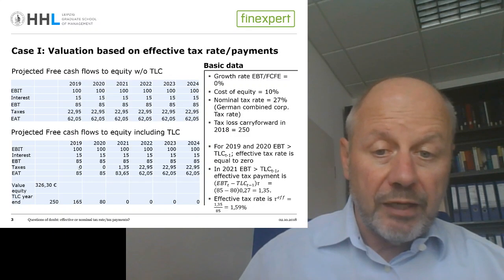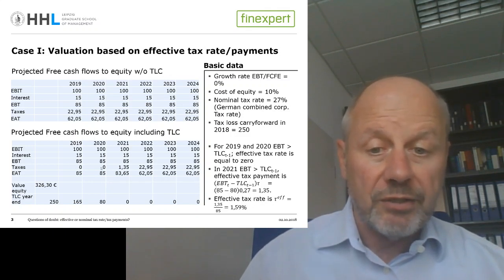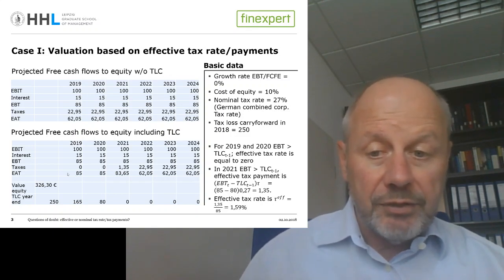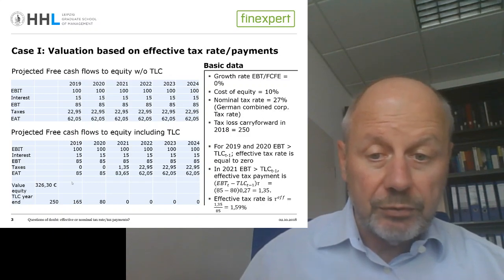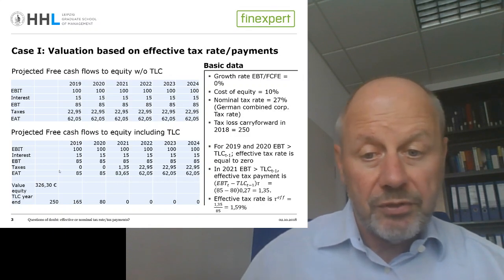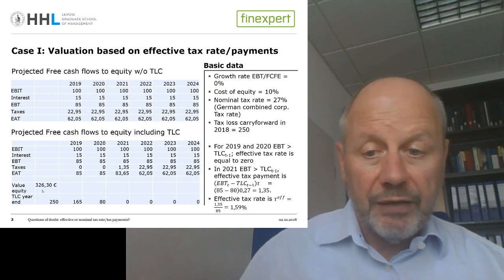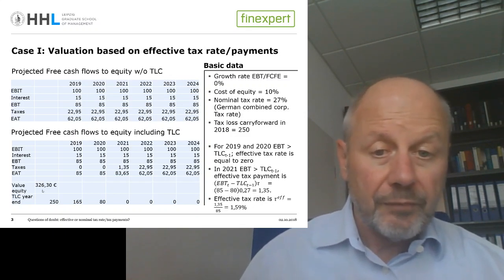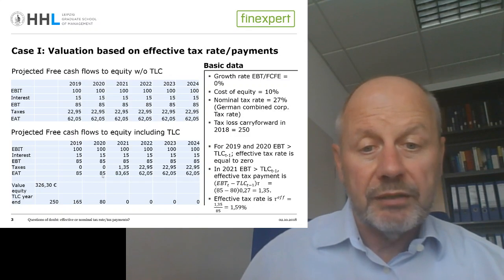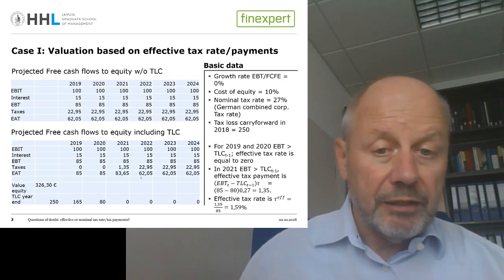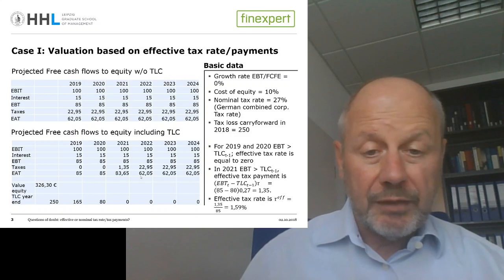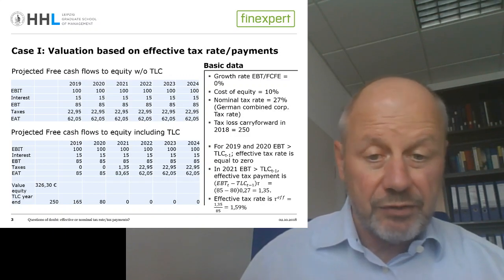That effective tax payment of 1.35 translates into an effective tax rate of 1.35 over 85, which is 1.6%. Note that the effective tax rates in the preceding years 2019 and 2020 are both equal to zero. We take these tax savings directly into account and discount our free cash flow to equity — which here equals EAT — with a cost of equity of 10%, and we get a value of 326.3. This is the standard approach: taking tax loss carry forwards into account by directly calculating effective tax payments and effective tax rates.